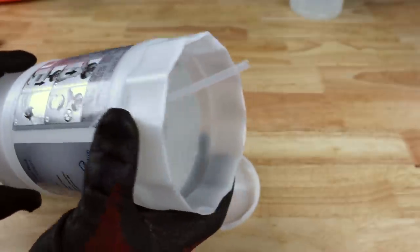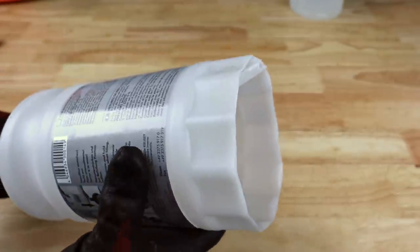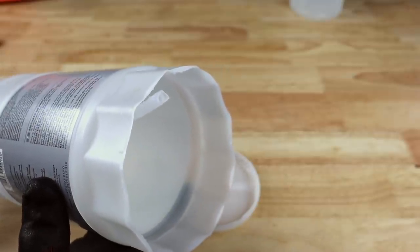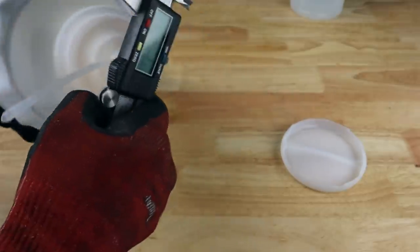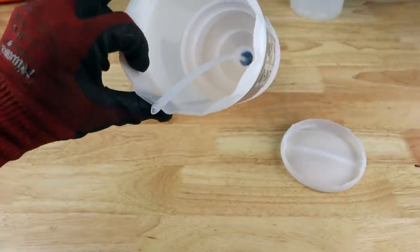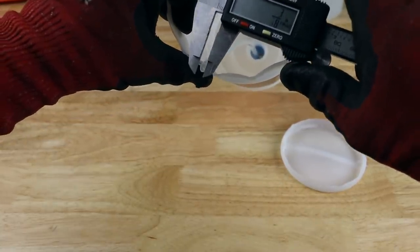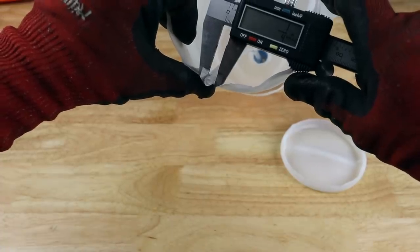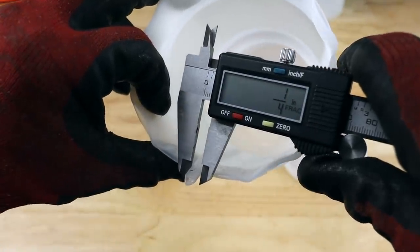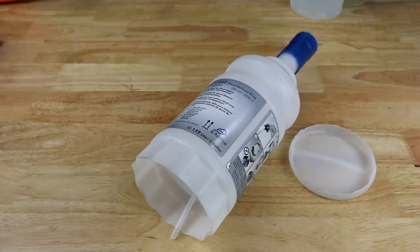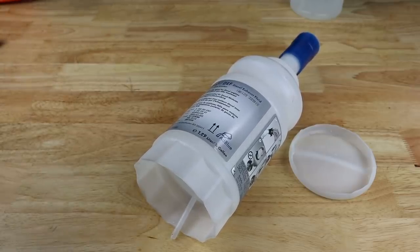If you've ever dealt with diesel exhaust fluid, it is not the most friendly thing. You definitely don't want to get it on your skin. What I like to do though, what I did with mine at the shop, is I put a vacuum hose on here. The outside diameter of this hose is about a quarter of an inch. So we need a piece of hose that the inside diameter is a little bit bigger than a quarter of an inch.